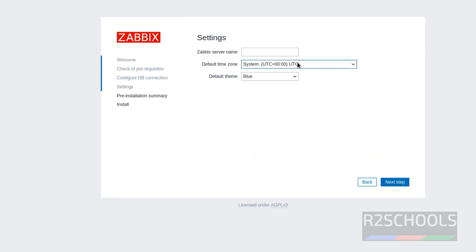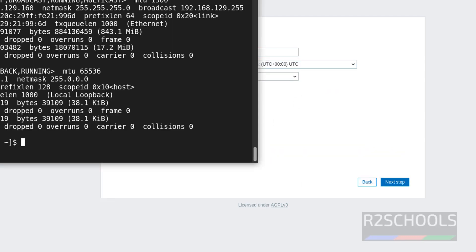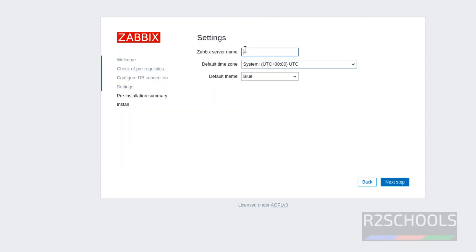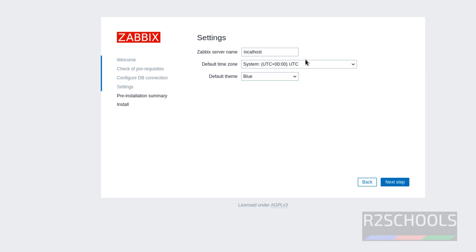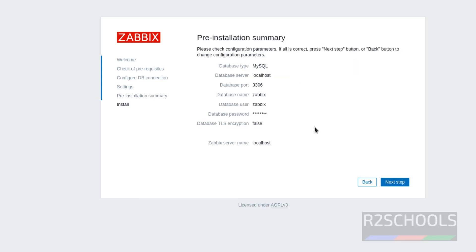Here, provide the Zabbix server name — that is localhost, or you can give the IP address. Click Next. Here we have four types of themes you can select, and also select the time zone. Then click Next Step to see the pre-installation summary. If you are okay with all the settings, click Next Step; otherwise click Back to change the settings.